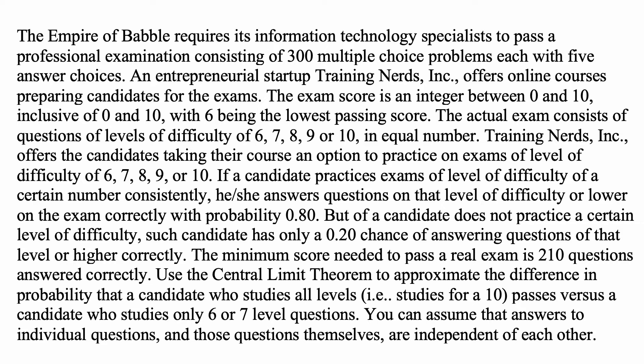The actual exam consists of questions of level of difficulty of 6, 7, 8, 9, or 10, an equal number. Training Nerds Incorporated, or I should say equal numbers, meaning the numbers of questions of level 6, 7, 8, 9, or 10 are each equal. So 300 divided by 5, and that's 60 questions of each level of difficulty.